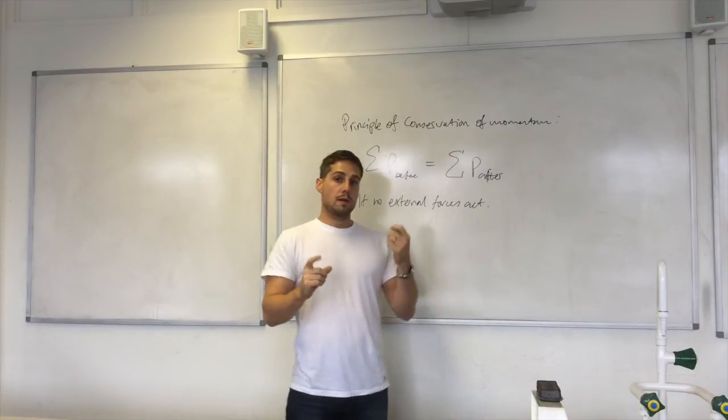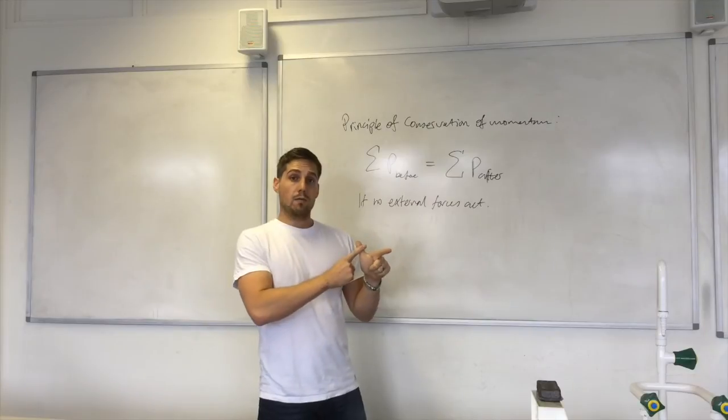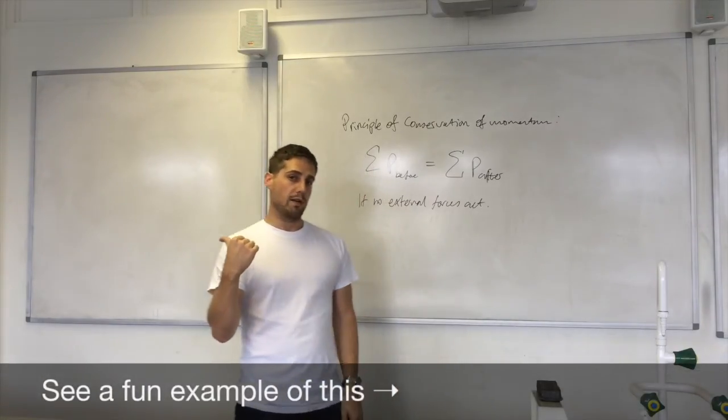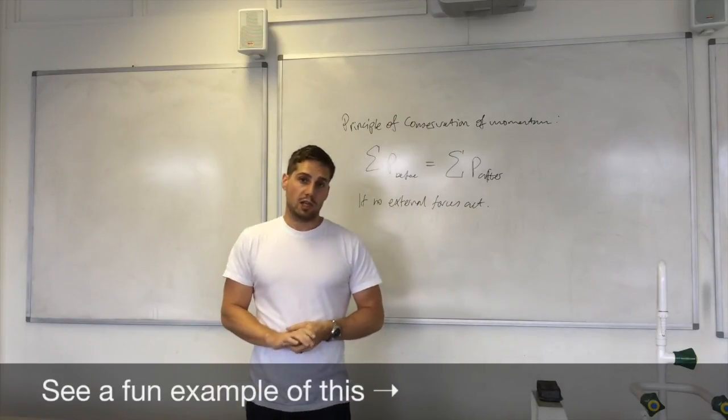What gained the momentum? Well, there's two objects, the cannon and the cannonball. The cannonball, we know, the cannon must therefore be the other object which has gained momentum in the opposite direction. So there's always a recoil when an object changes its momentum.